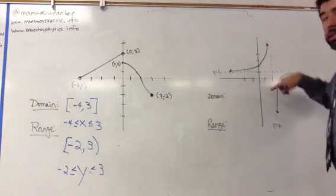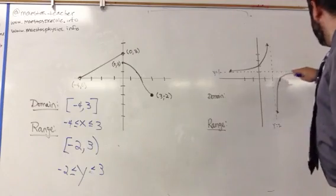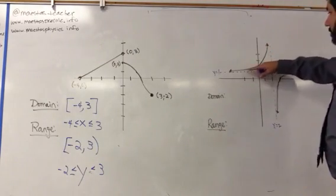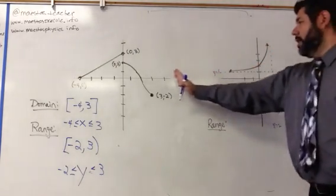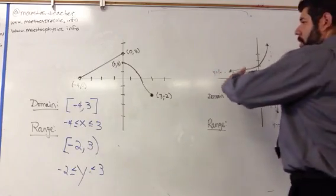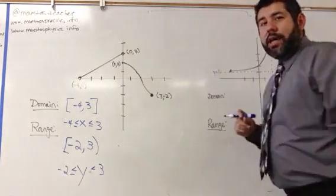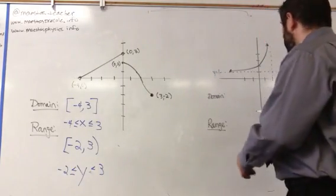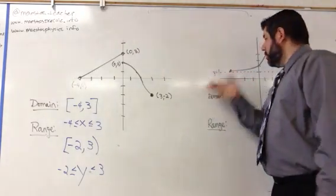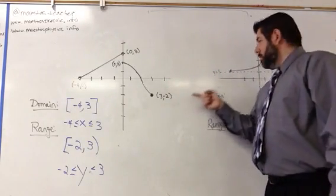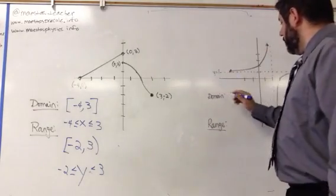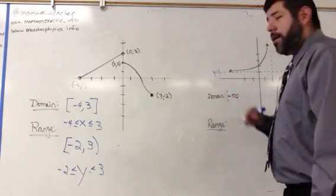In this particular problem, we're going to look at the x axis. What is going to be our smallest x value? Well, it doesn't really end — it just keeps going, so it's going to go out to negative infinity. So my smallest value here is negative infinity.